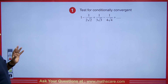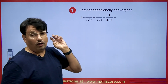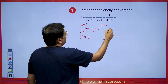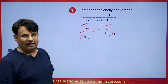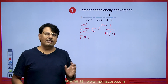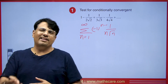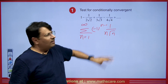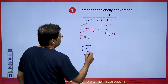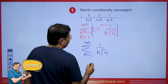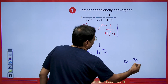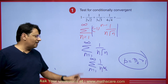Now, if you are given the series n=1 to infinity of (-1)^(n-1) · 1/(n√n) and asked to test conditional convergence, we see this is an alternating series. Using the Leibniz theorem, it is convergent because the series is decreasing and u_n tends to 0 as n→∞. Now we take its modulus, giving us Σ1/(n√n) = Σ1/n^(3/2). By the p-series test, p = 3/2 which is greater than 1, therefore by the p-series test it is convergent.